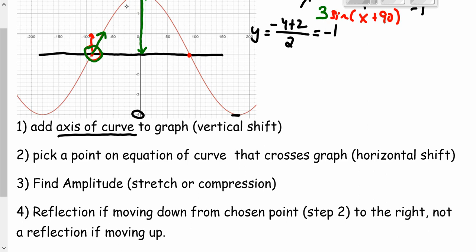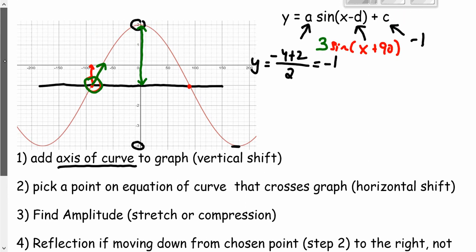If we were moving down, it would be a reflection. And that's where the second form of this equation comes in. So I can enter this equation that I have here into desmos, and it's going to produce this graph here.